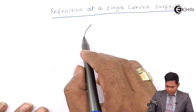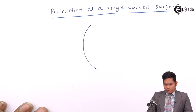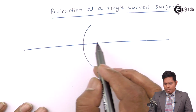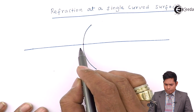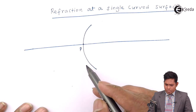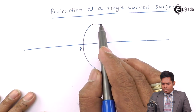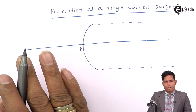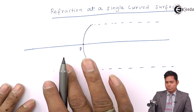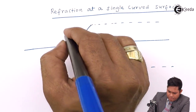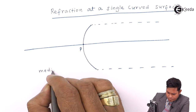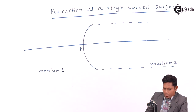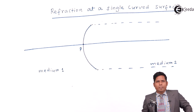Consider a curved surface like this — this is the curved surface and this is the principal axis, and this is the pole. This surface separates two media: on this side you have a medium like glass, and on this side it is air. For convenience, I will call this medium number one and this medium number two. These are two different media having different refractive indices.